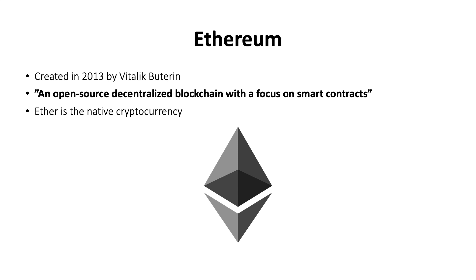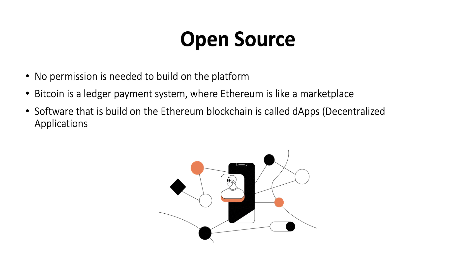Open source, decentralized blockchain, smart contracts — a long list of crypto lingo that can easily go over one's head. Let's explore the basics. Open source means that no permission is needed to build on the platform. While Bitcoin primarily serves as a ledger payment system, Ethereum is more like a marketplace.